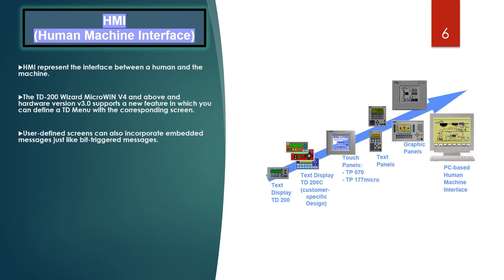Earlier features with dynamic messages triggered by bits continue to be supported, but messages triggered by bits are now called alarms. To use and configure the new screens, you require a TD200 C version 1.0 or above, or a TD200 version 3.0 or above.